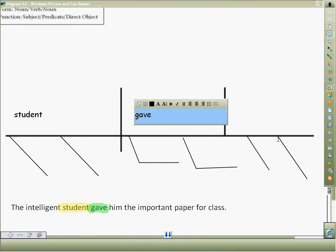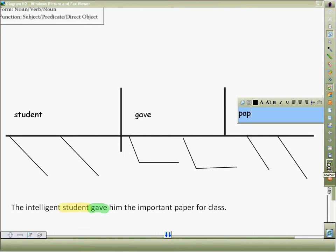The third question that we ask is what did he do it to? What did the student give? He gave a paper. So then we use paper as our direct object.